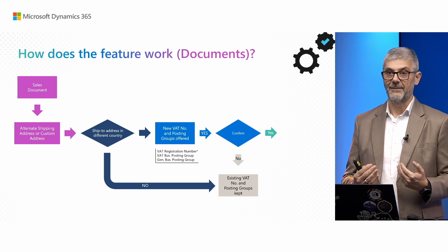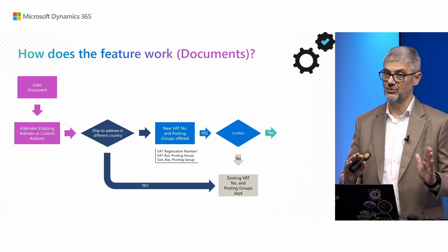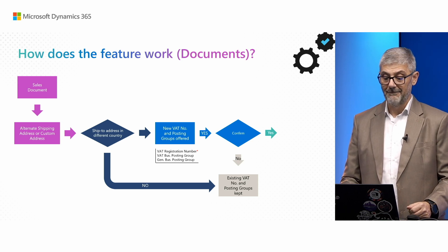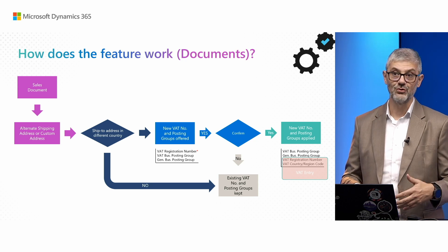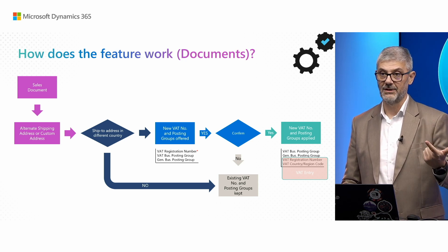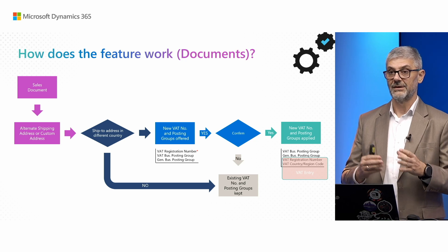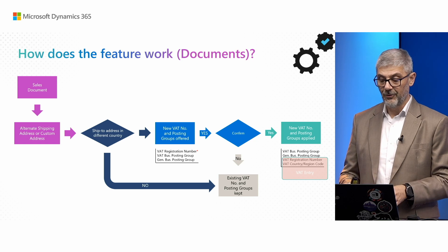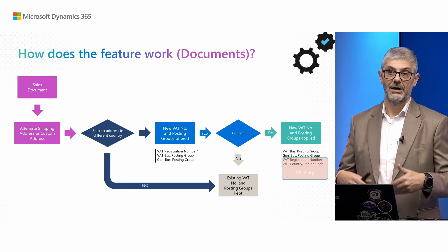If you have everything configured, you will be offered the new VAT number and eventually posting groups, and you need to choose whether to accept or not. If you do not want to accept, business as usual — nothing will be changed. But if you confirm, the system will apply the new VAT number to your document and posting groups if configured. You will get VAT business posting group, general business posting group, VAT registration number, and the new VAT country region code field. These will all be applied, and the VAT registration number and VAT country region code will be stored in the VAT entry when you post, so you can easily filter VAT entries by country for VAT statements and returns.